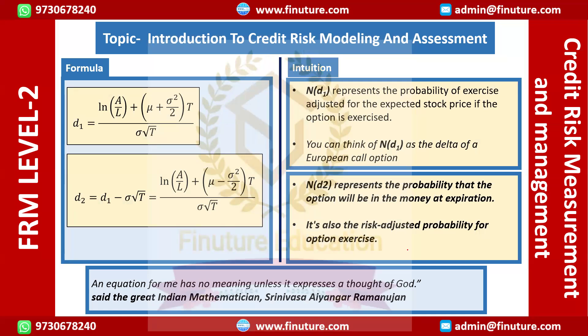We are interested in calculating loss given default. Gradually we are moving to the question. If we want to calculate loss given default, we understand that if the firm's value is negative it will default, so we find the probability of the firm's value being negative. These are the two expressions, D1 and D2, that you have already seen in Level 1 when dealing with the Black-Scholes model for option pricing. They come from the return distribution of the underlying — here it would be the return distribution of the firm's assets.